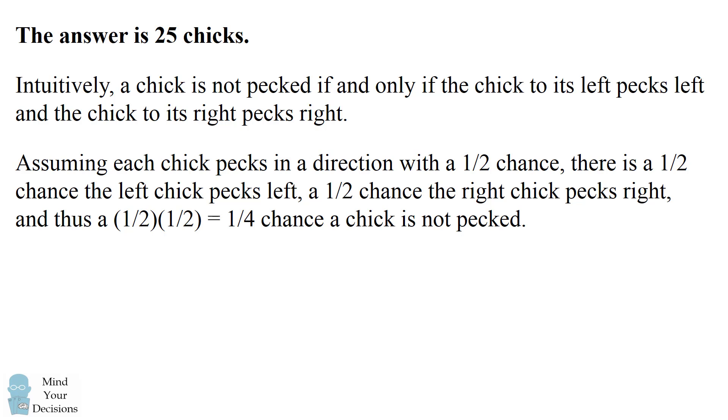What is the probability of this happening? Assuming each chick pecks in a direction with a one-half chance, there's a one-half chance the left chick pecks left and a one-half chance the right chick pecks right. Thus, there's a one-half times one-half, which equals one-fourth chance that a chick is not pecked.